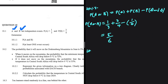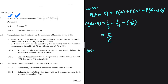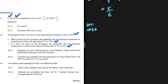Let's move ahead and do 10.2 — quite an interesting one. The probability that it will snow on the mountains in June is 5%. When it snows on the mountains, the probability that the minimum temperature in Central South Africa will drop below zero degrees Celsius is 72%. If it does not snow on the mountains, the probability that the minimum temperature will drop below zero degrees Celsius is 35%. Question 10.2.1 asks us to represent this information on a tree diagram, clearly indicating the probabilities on each branch.